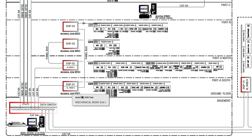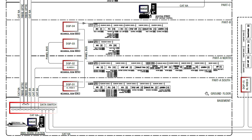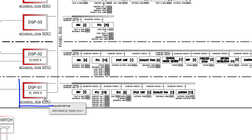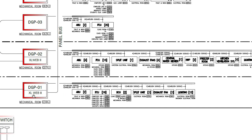Now let's have a look at DGP1. This is the location for DGP1 — it is on the ground floor, part A south. As you can see, DGP1 has written here 'Excel Web 2', which is a DDC controller from Honeywell. We have shown this model number to identify that this DGP contains a DDC controller.